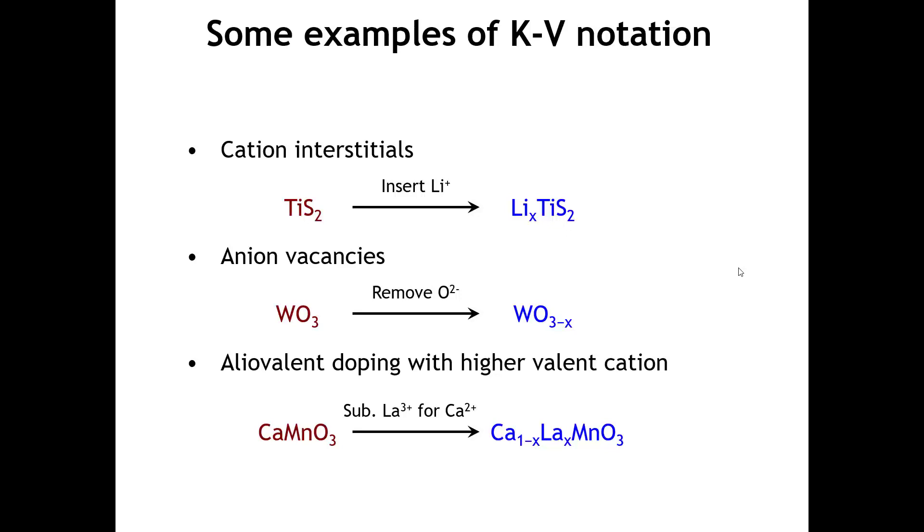Okay. Let's start with the first one. What is the defect? The defect is a lithium cation. Where is that lithium cation going? It's going to an interstitial site. Because the lithium cation has a plus 1 charge and the interstitial site normally has no charge, this is going to be a defect with a plus 1 charge. So lithium, subscript i, and then a dot as the superscript.